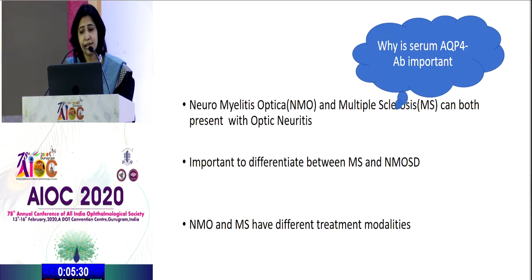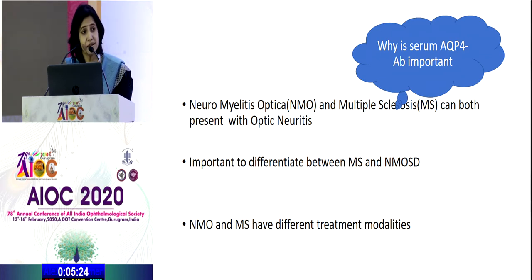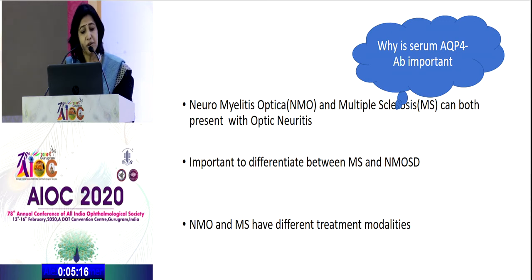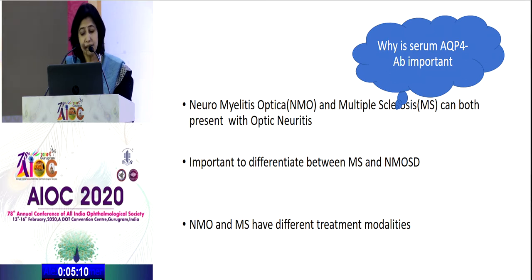So why is this serum aquaporin-4 antibody so important? Because both neuromyelitis optica and multiple sclerosis can present with optic neuritis and similar neurological features, especially in the optical spinal variety of multiple sclerosis. It's also important to differentiate between the two because they have different treatment modalities, and a particular treatment modality can be detrimental in the other.